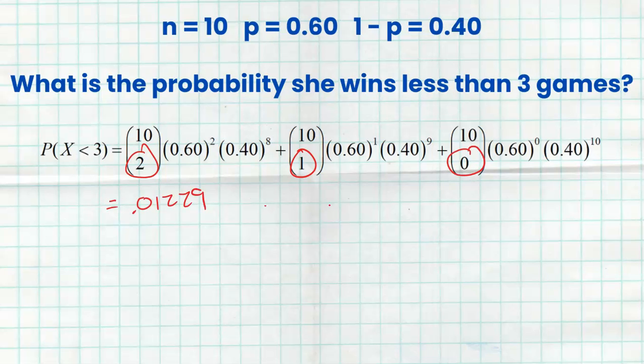So be very careful. If the question was worded a little bit differently and said 'at most three,' then all of a sudden we want to equal three — we'd have to include 10 choose 3, 0.6 to the third, 0.4 to the seventh. And when we go to binomCDF, we would type in three, so it calculates three, two, one, and zero and adds them all together.